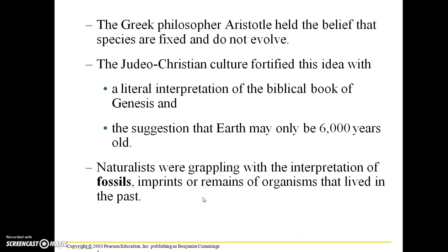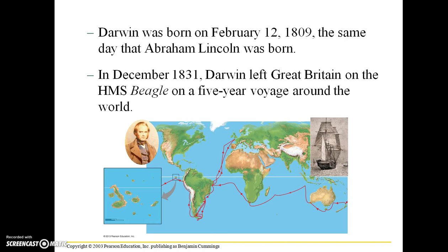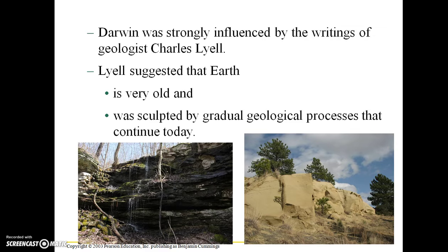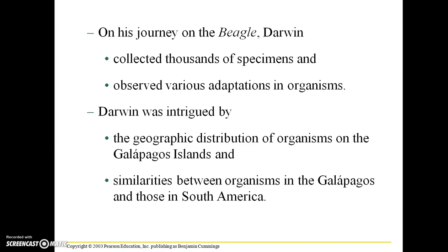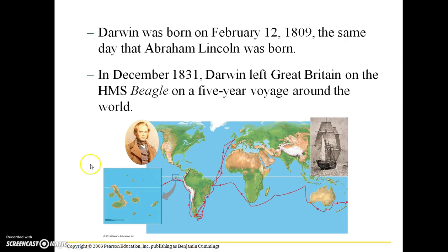Naturalists were grappling with the interpretation of fossils, which are imprints or remains of organisms that lived in the past. Darwin was born — incidentally the same day as Abraham Lincoln — on February 12th, 1809, in Great Britain. In December of 1831, as a young man, Darwin left Great Britain on the HMS Beagle on a five-year voyage around the world. The red arrows on this map trace the path of the HMS Beagle, and Darwin's most famous work occurred on the Galapagos Islands.